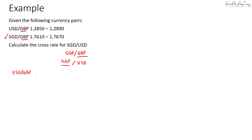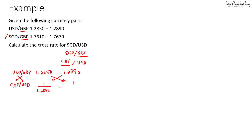So we need to switch the price currency and the base currency, changing it to pound over USD. Keep in mind that when you switch, always change the bid to the ask and the ask to the bid. So this would be 1 ÷ 1.289 for the bid, and 1 ÷ 1.285 for the ask, giving 0.7758 and 0.7782 respectively. This gives us pound to US dollar.